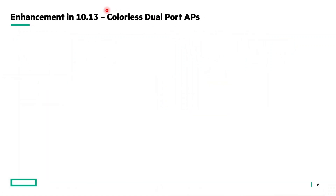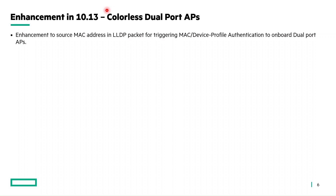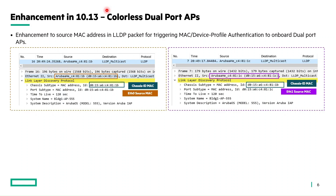Now let's understand the enhancement in 10.13 to support colorless dual port AP deployment. The MAC move issue caused by using chassis MAC for LLDP authentication, and the resulting need to disable LLDP auth, both making it a colored port configuration, are overcome by a new enhancement. The solution is to use the source MAC address from the LLDP packet for triggering MAC or device profile authentication to successfully onboard dual port APs. Even though the chassis MAC remains the same from both AP ports, the source MAC address in the LLDP packet is different — it is the interface MAC address of each AP port.